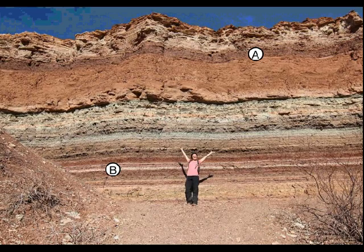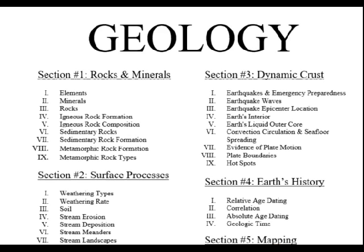How about this one right here? There's a light-colored layer down towards the bottom. Which one was deposited first? It's going to be layer B. Layer B was deposited first because we see it at the bottom. So we can tell by looking at rock layers the order of events, or the age of those rocks relative to one another.